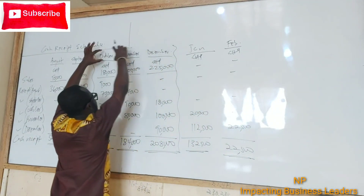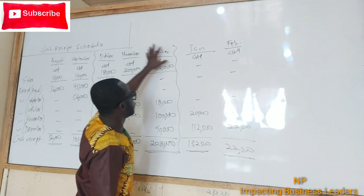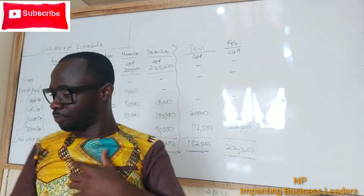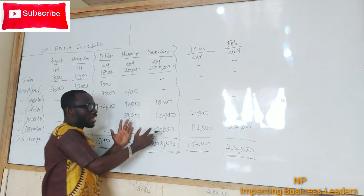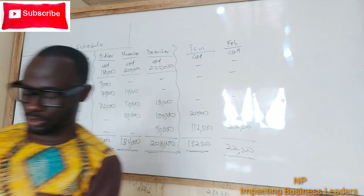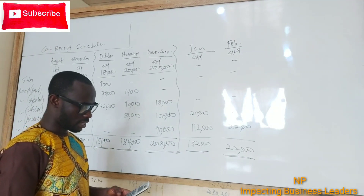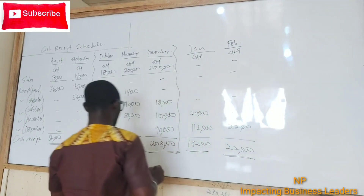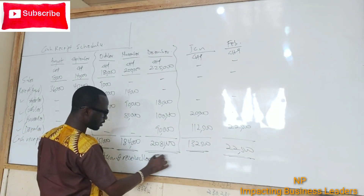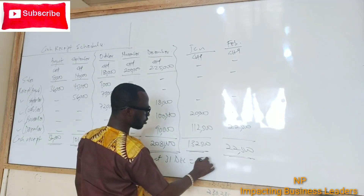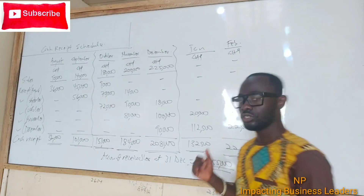The question is twofold: cash receipts October to December, plus the accounts receivable balance on 31st December. Anything after December is going to be receivables. So we add the post-December amounts: $132,500 plus $22,500 equals $155,000. Therefore, accounts receivable at 31st December is $155,000. That is the answer to our question — very simple, straight to the point.